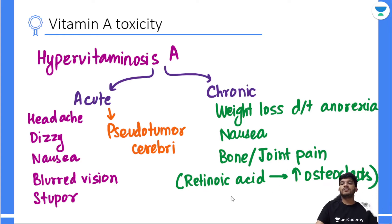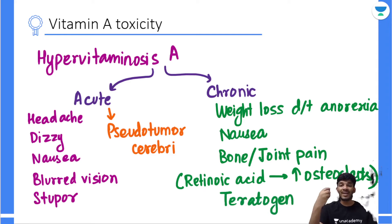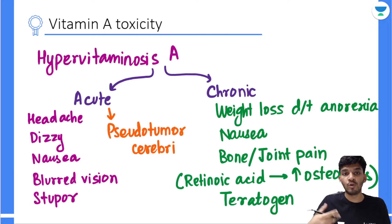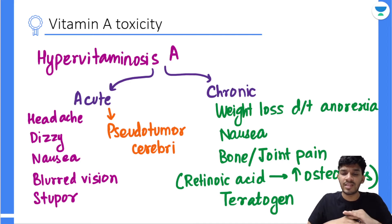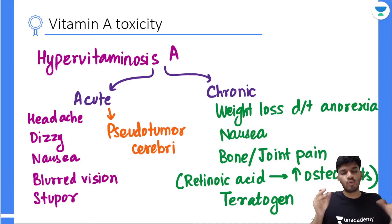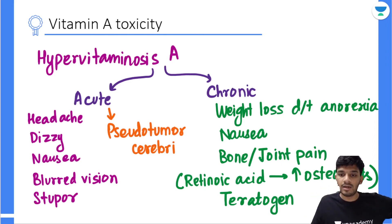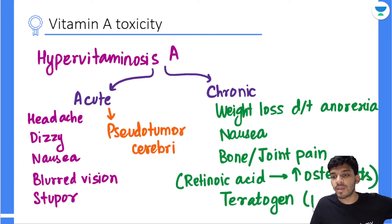Finally, Vitamin A is also a teratogen. Vitamin A and its derivatives are used to treat acne, but should not be given to pregnant females or even females likely to become pregnant. If a female is in the adolescent age group, Vitamin A derivatives are avoided because of potential teratogenic effects on the child.